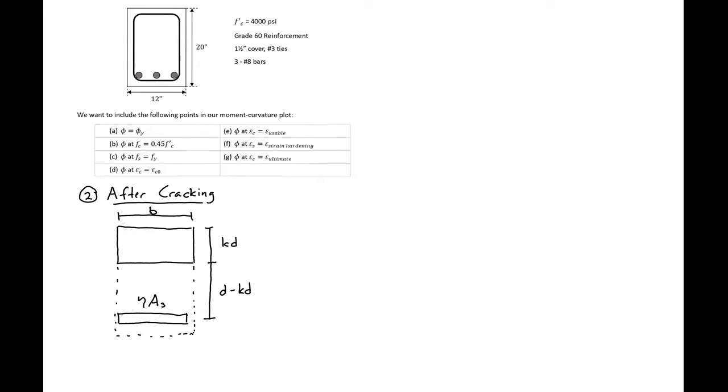Next we're going to continue our example looking at the section shown on the left with a width of 12 inches and a height of 20. We are working on a moment curvature plot and we're calculating our second necessary point immediately after cracking. For this we're going to use our cracked transformed section properties.